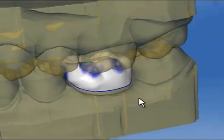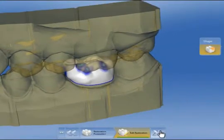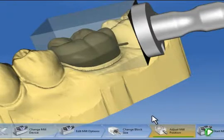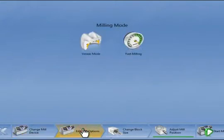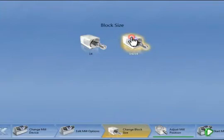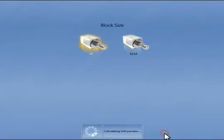We are now satisfied with the design and click Next in the milling preview where the restoration is shown in the block. Here we can again check or change the milling unit. We can choose the milling options such as fast milling or veneer mode that we naturally ignore in this case. We can also vary the block size and ultimately alter the position of the restoration within the block.